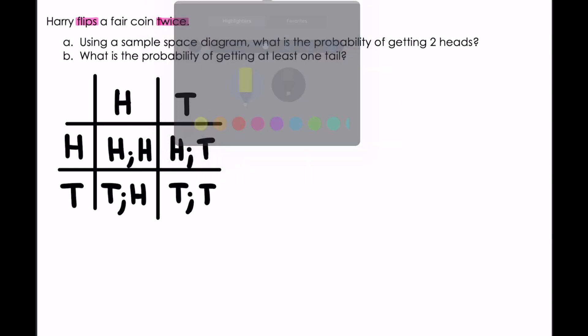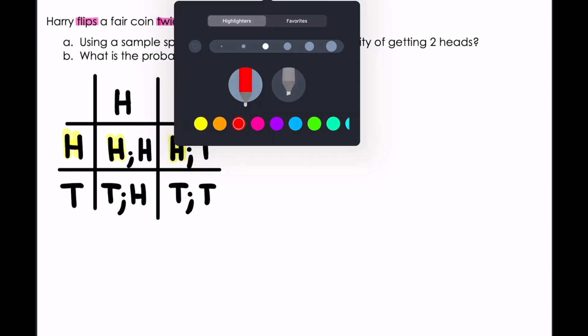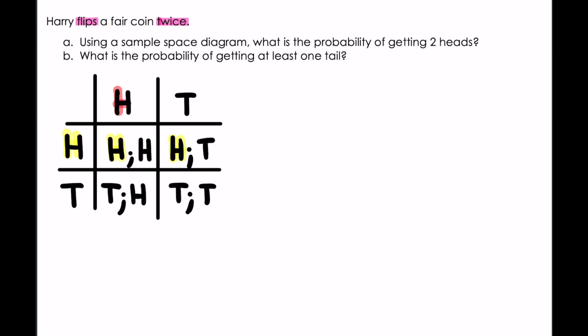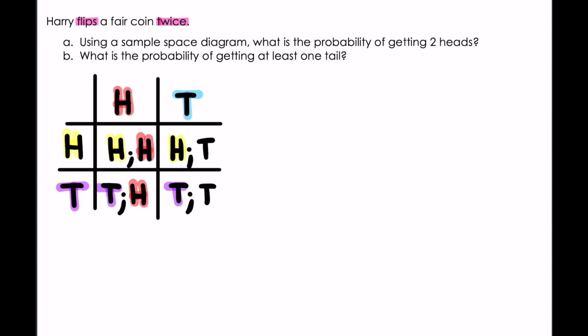So if I were to show you where these come from: this head is represented in the front over there, this head is represented over here, this tail is over here, and this tail is represented over here.